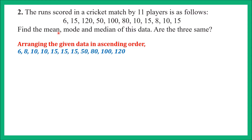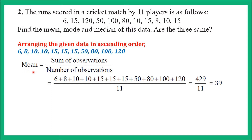Mean = sum of observations ÷ number of observations. I have written all the observations and added them in the numerator, with 11 in the denominator since there are 11 players total. Adding all the runs gives 429. So mean = 429 ÷ 11 = 39. The mean score is 39.